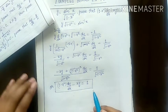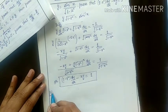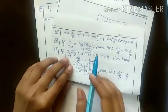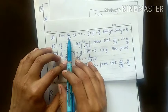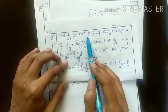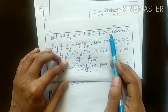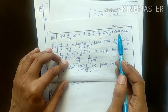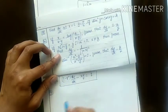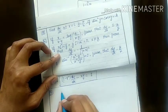Next example is number 9. You have to find dy by dx at x equals 1 and y equals pi by 4, given that sine square y plus cos of xy is equal to k.